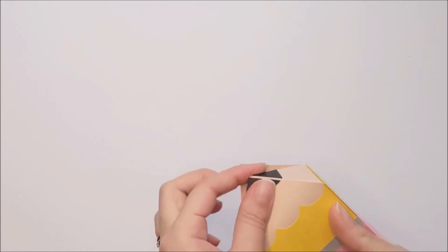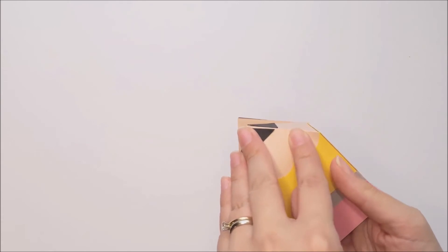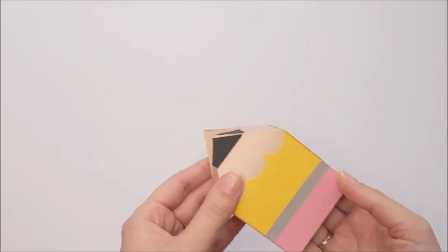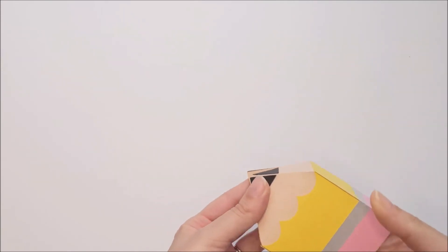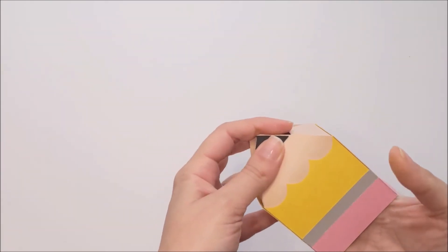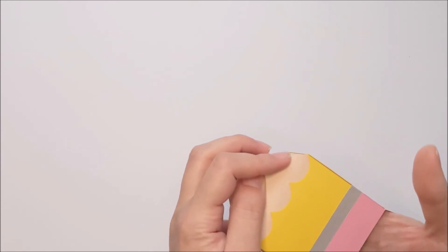And again, I'm applying pressure from the inside until that glue sticks. Depending on the size you're making your box, if your box is too small for your hand to fit inside, you can use a skewer or a pencil or something similar to apply pressure from the inside.